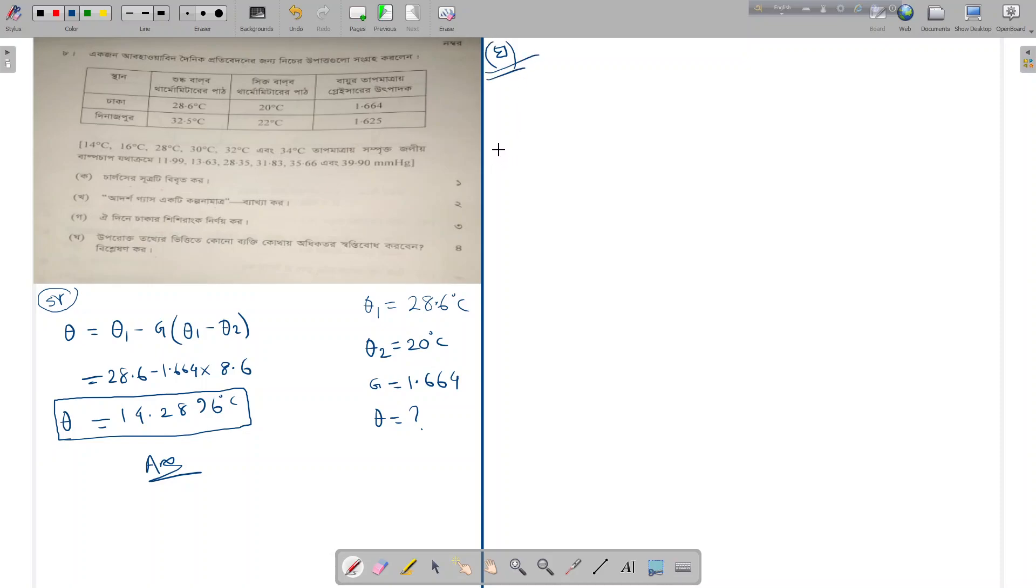For question two, R equals F1 by capital F1 times 100 percent. Similarly, R of Dinaspur equals F2 by capital F2 times 100 percent.